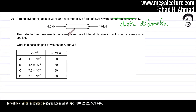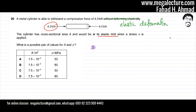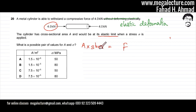The cylinder has a cross-sectional area of A and would be at its elastic limit when a stress of sigma is applied. The question asks for the possible pair of values of A and sigma. I'm going to use the formula for stress, which is force over area, rearranged to F equals cross-sectional area multiplied by stress.